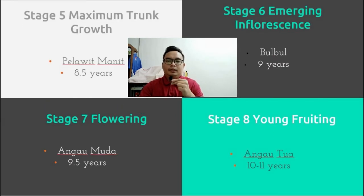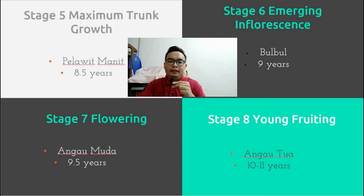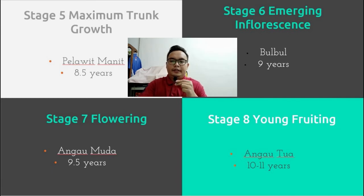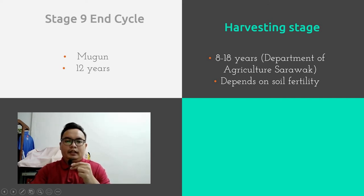Stage 5 is maximum trunk growth, or Pelawi Manit, at about eight and a half years. Stage 6 is emerging inflorescence, locally known as Bulbul, at nine years. Stage 7 is flowering, known as Angaw Muda, at about nine and a half years. Stage 8 is young fruiting, locally known as Angaw Tua, at about ten to eleven years. The last stage is full cycle, or Mugun, at about twelve years.